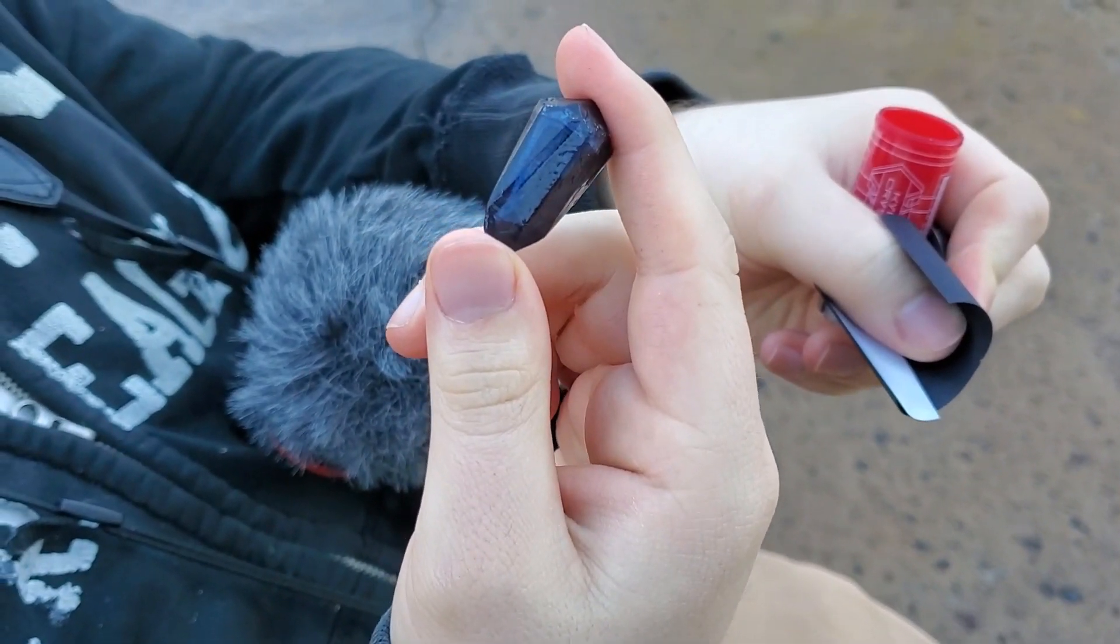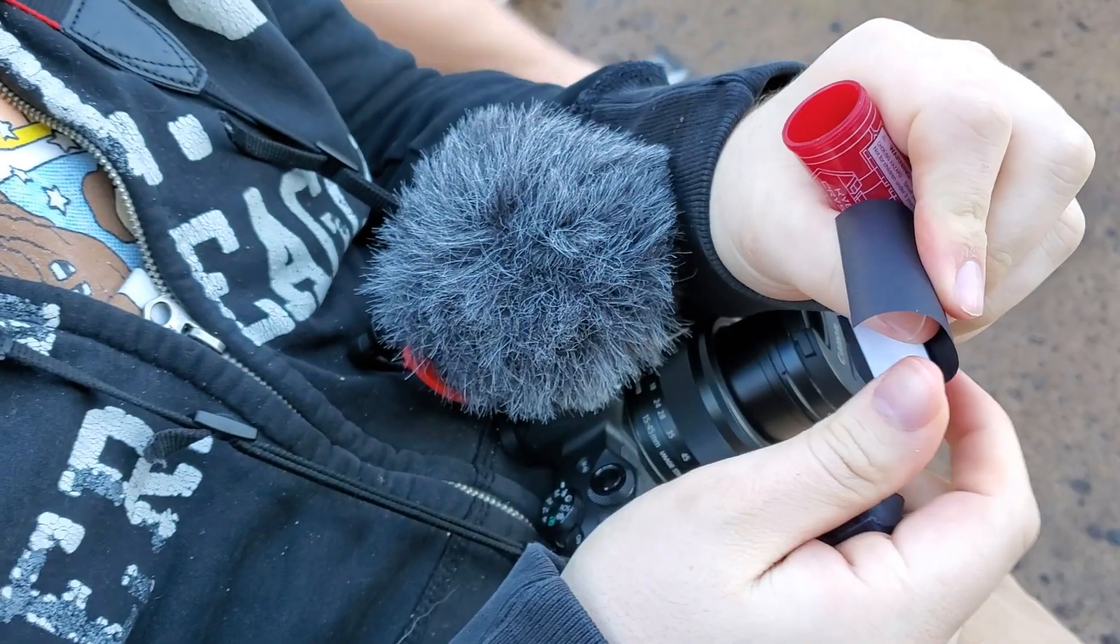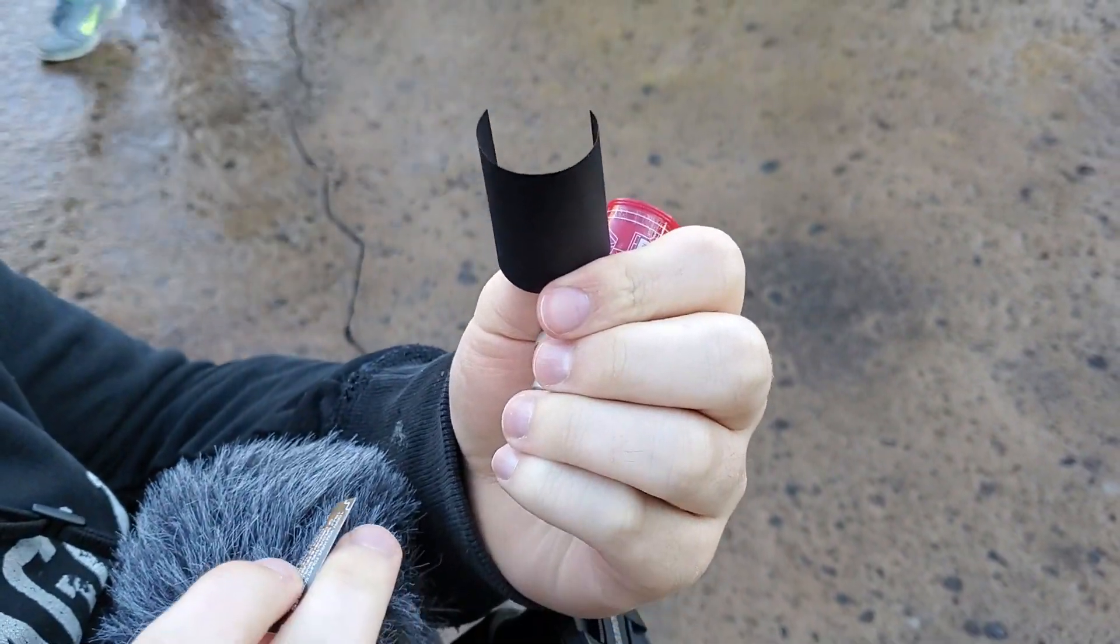In case somebody doesn't know, they used to shine lights through them to see if it was black, and now they put that black piece of paper in there so you can't do that.